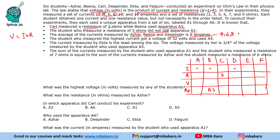The student who measured the highest current got a voltage of 32 volts and used apparatus A4. The highest current is 16 amperes, so that means the person used 16 × 2 = 32 volts and used A4 for their experiment.